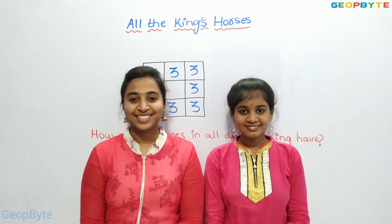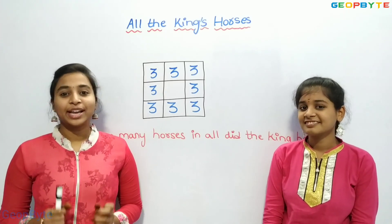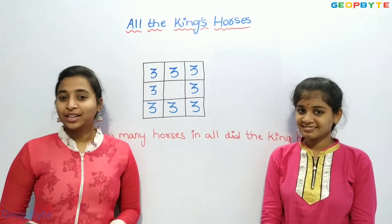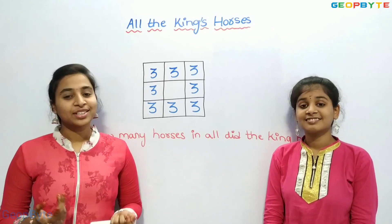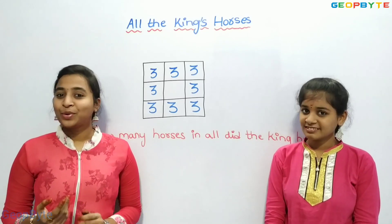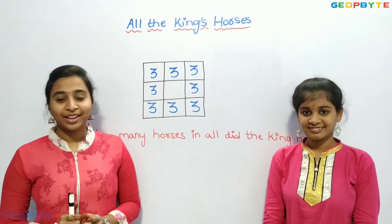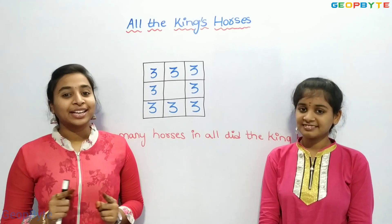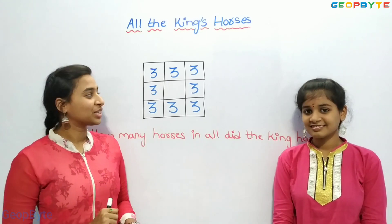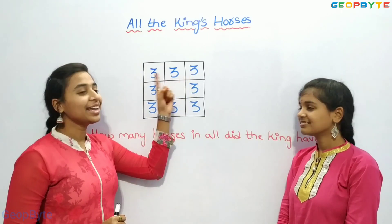Hey kids! Once, there was a king who could count only up to nine. The king loved horses, but he could not count all of his horses. So he arranged the horses such that when he counts the horses on each side, there will be nine. Three plus three is six, six plus three is nine.